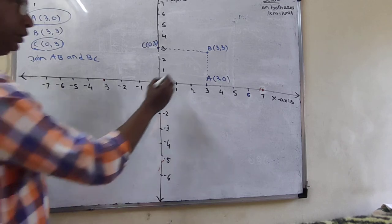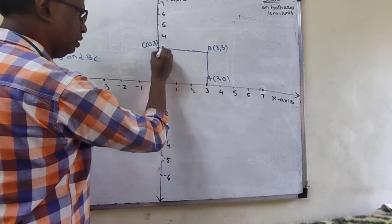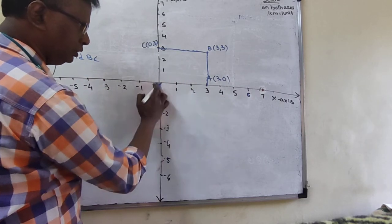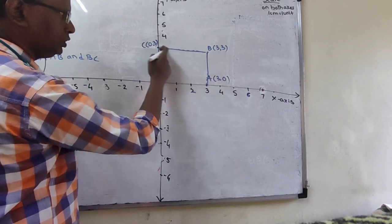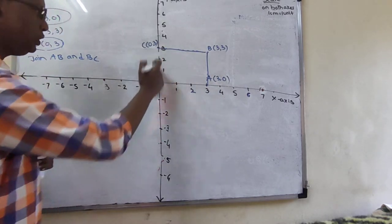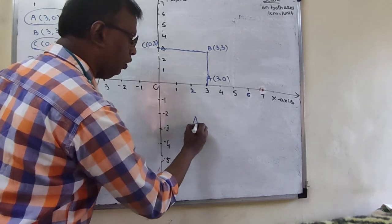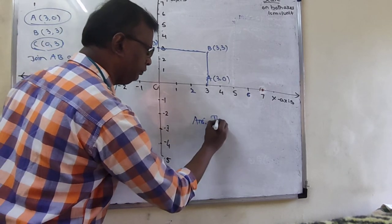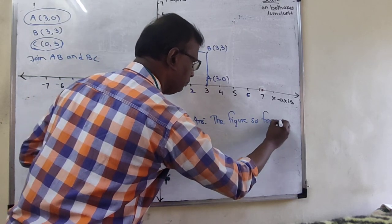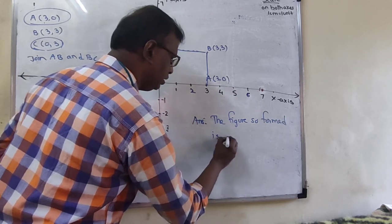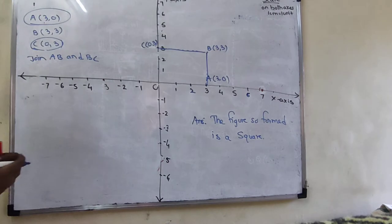Now join A to B and B to C. The distance AB is 3, BC is 3, and the other sides are also 3 each. Since all sides are equal, the figure formed is a square. Write that answer on the right-hand side of your graph paper.